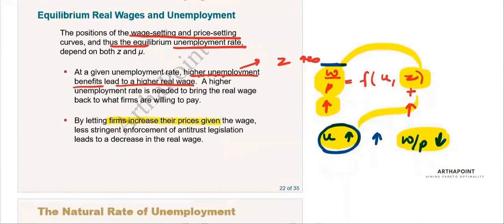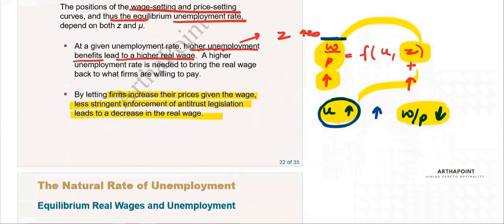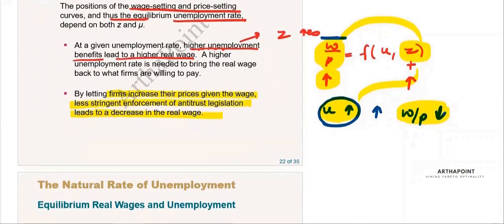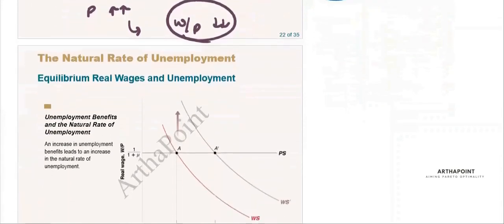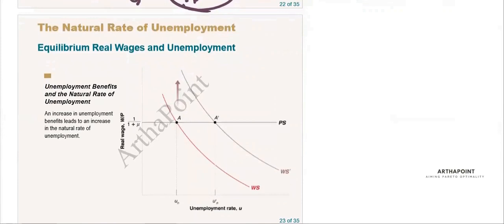By letting firms increase their prices given wages, less stringent enforcement of antitrust legislation leads to a decrease in the real wage. As prices increase, w/p automatically decreases, so the real wage decreases.